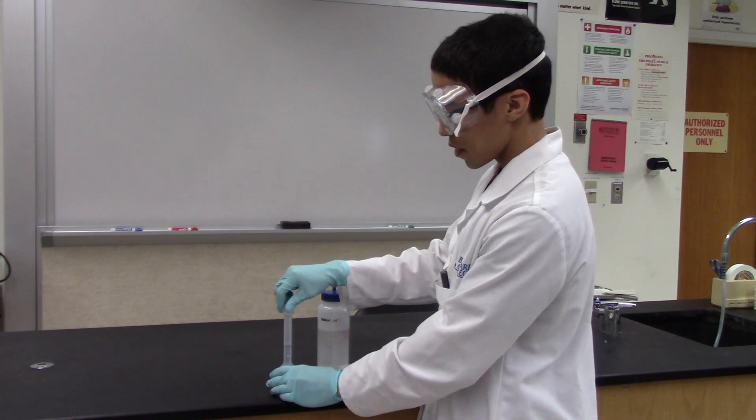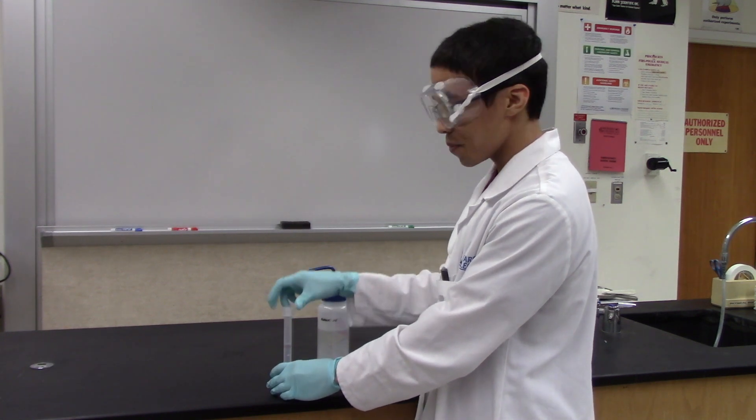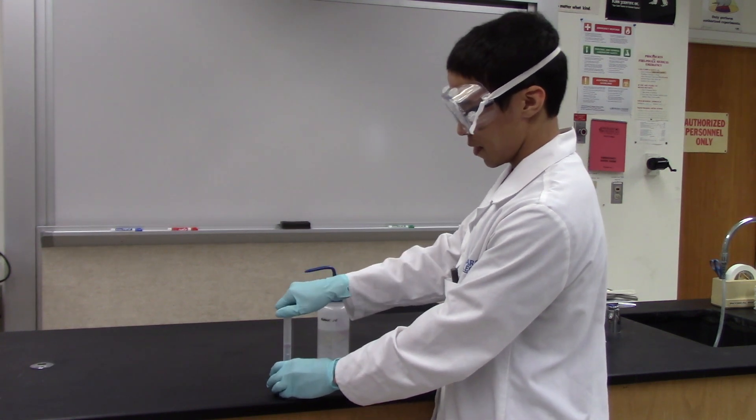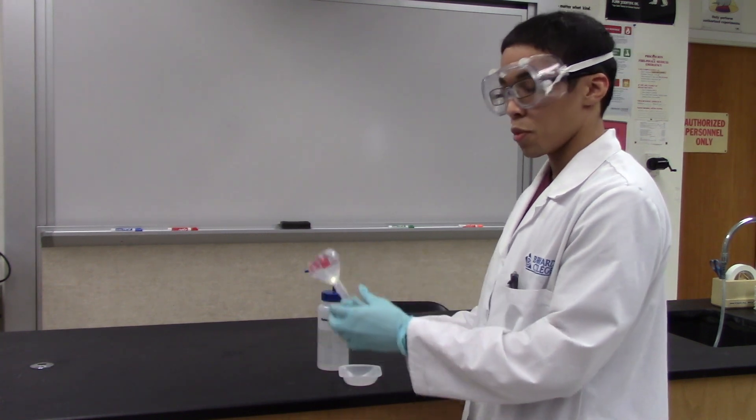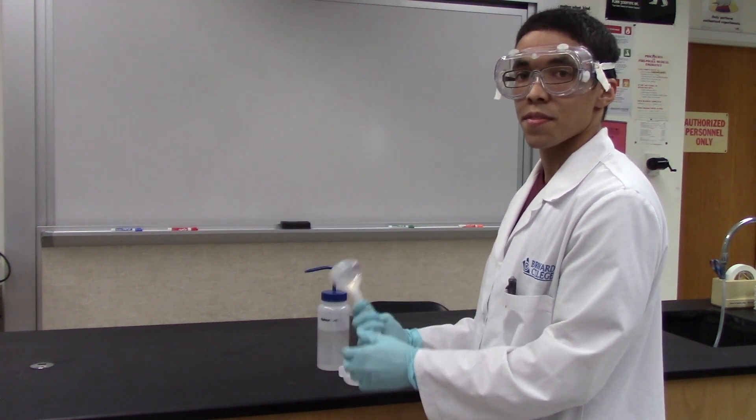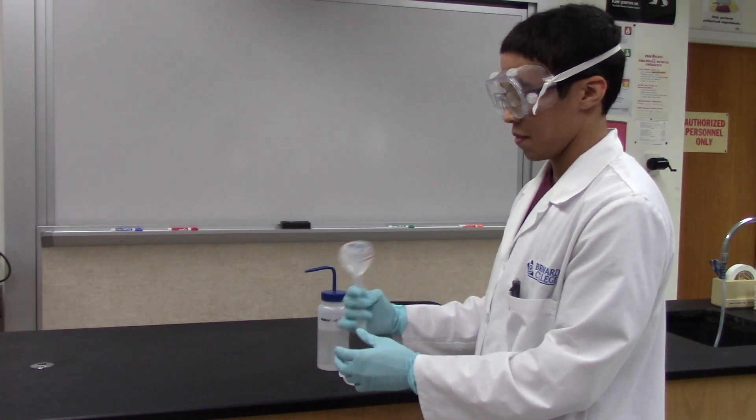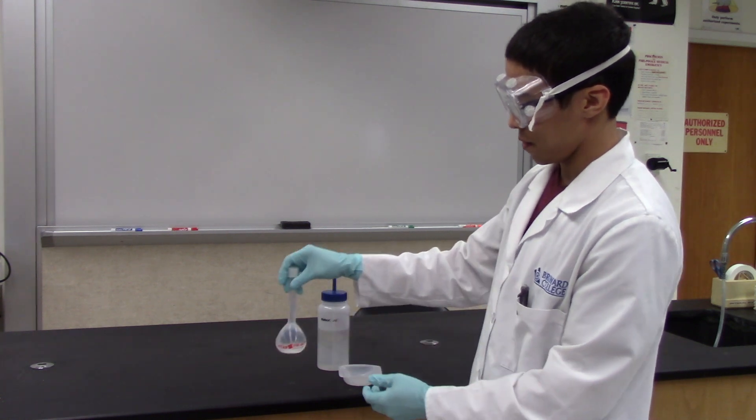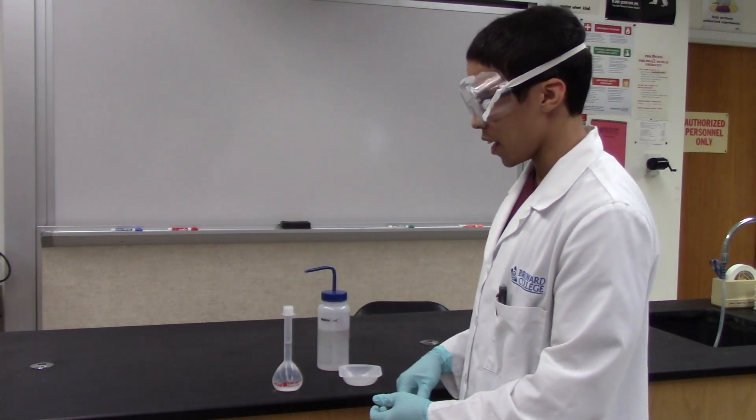Once you have filled the volumetric flask up to the red line, you will cap it and turn it over a couple of times to mix the contents. And that's how you prepare a measured solution.